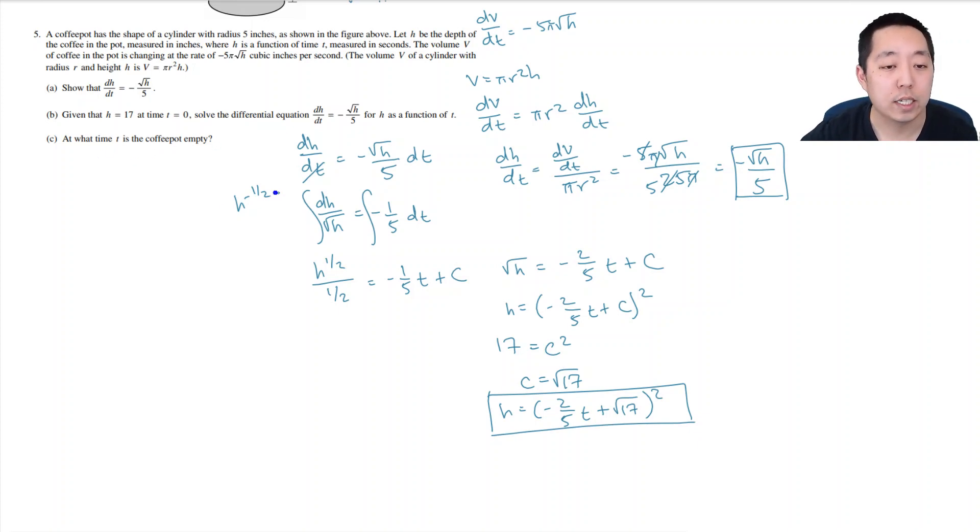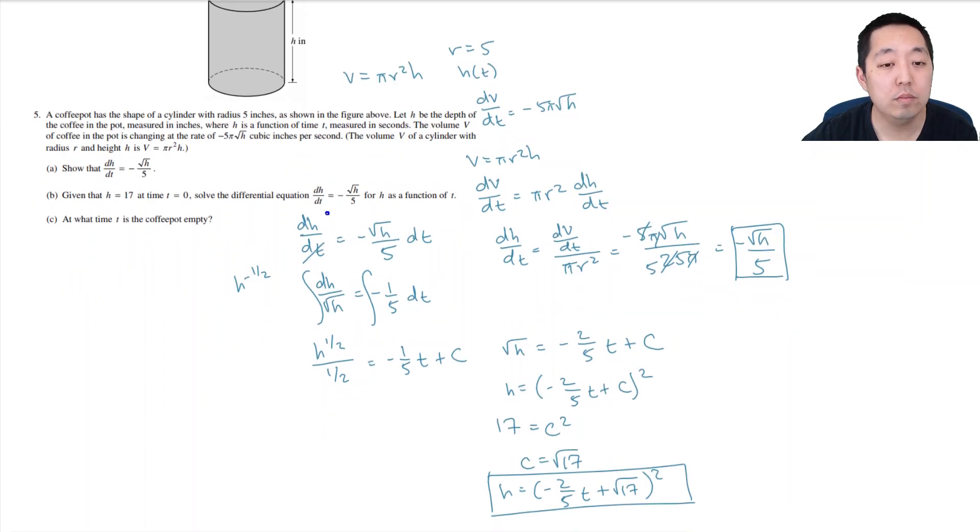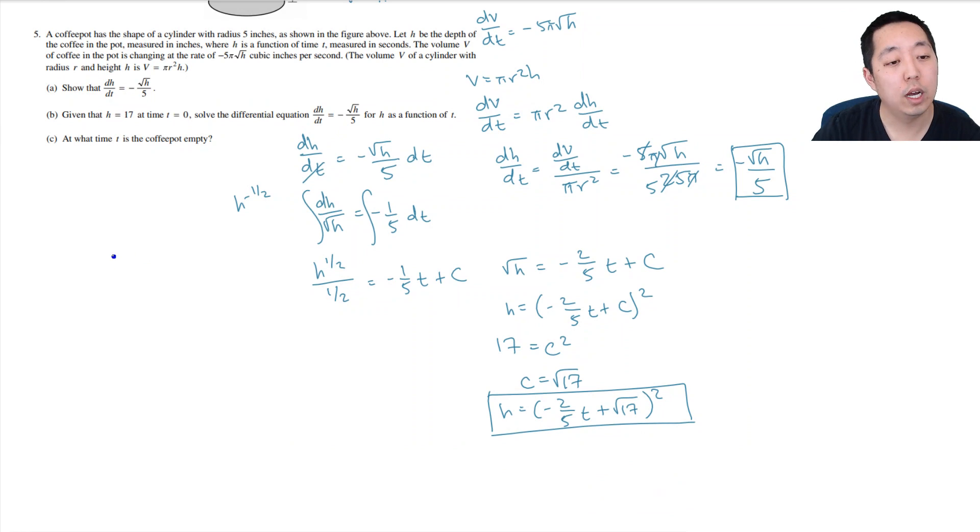At what time t is the coffee pot empty? I want to know when h is 0. So when is h equal to 0? That's when the coffee pot's empty, so that would be (-2/5 t + √17)² = 0. That happens when -2/5 t + √17 = 0. Or t is equal to 5/2 √17. And that's it.